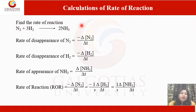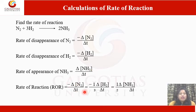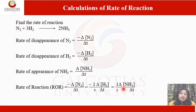Consider another example: find the rate of reaction for N₂ + 3H₂ → 2NH₃. The rate of disappearance of N₂ = −Δ[N₂]/ΔT. Rate of disappearance of H₂ = −Δ[H₂]/ΔT. Rate of appearance of NH₃ = Δ[NH₃]/ΔT. The ROR is: −Δ[N₂]/ΔT = (1/3)(−Δ[H₂]/ΔT) = (1/2)Δ[NH₃]/ΔT. The factor 1/3 arises because the stoichiometry of H₂ is 3, and the factor 1/2 arises because the stoichiometry of NH₃ is 2.